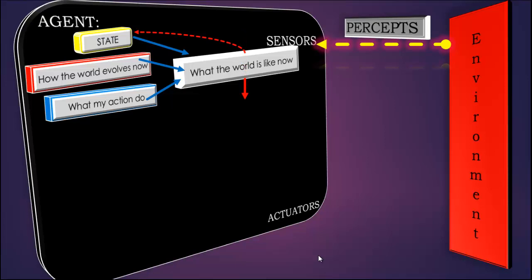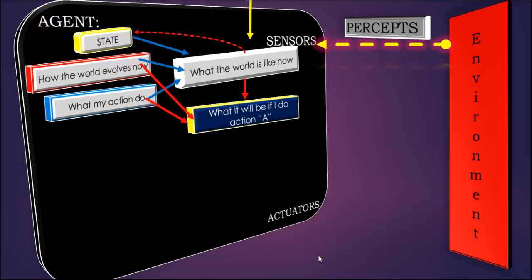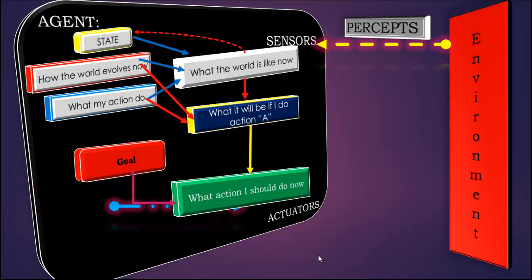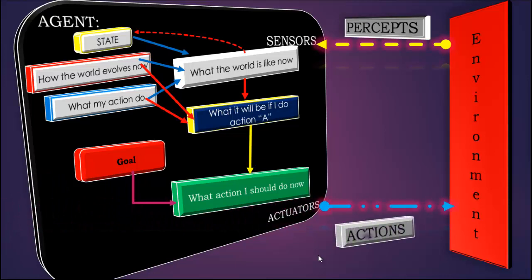But note that the agent is not able to take a decision based on its internal state only. That's why it asks again: what will be the result if I take a certain decision? In that situation, goals help the agent take the right decision, and the decision is sent to actuators to act upon the environment.